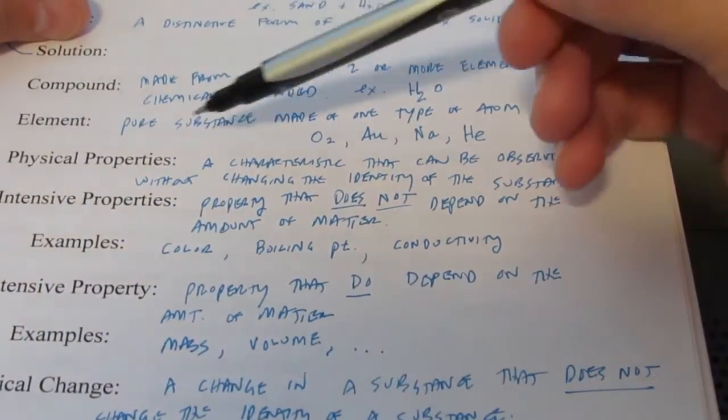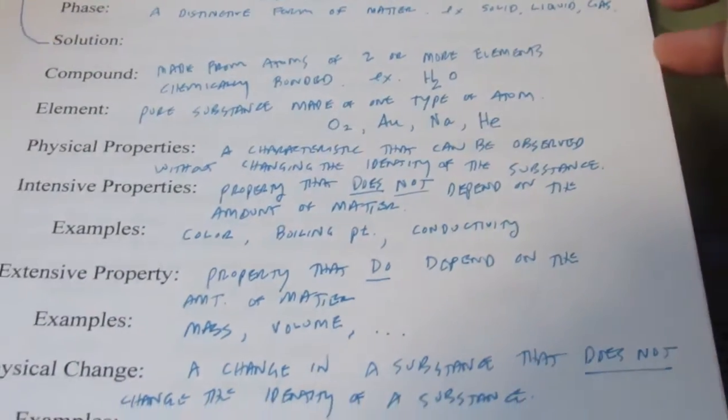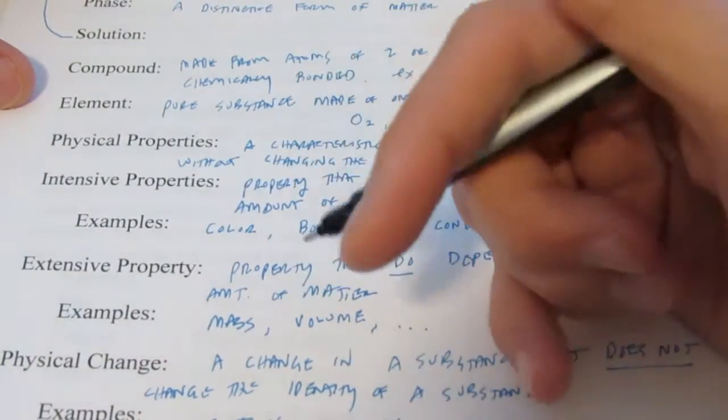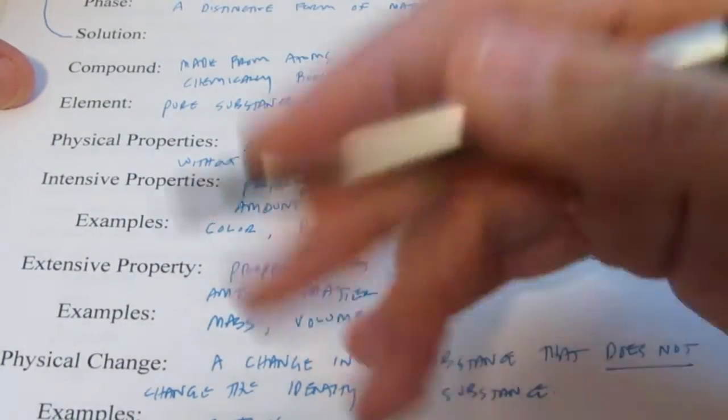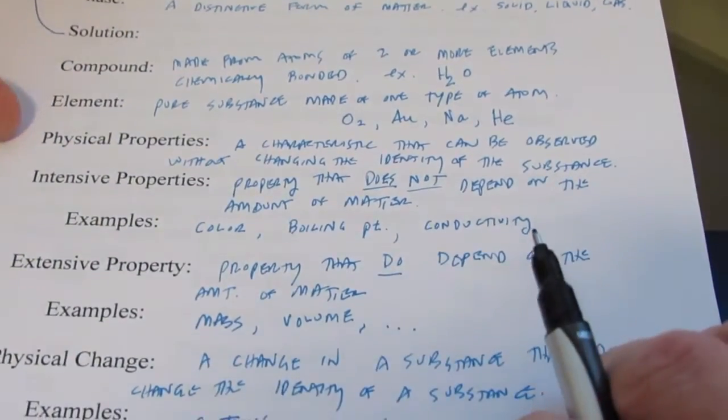We talked about intensive and extensive. Make sure you know the difference between the two. For the example, I'll probably have you choose which of the following is an intensive property. Or perhaps I might say which of the following is an extensive property. Or maybe I'll even ask you to give an example.